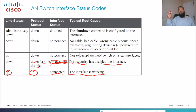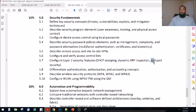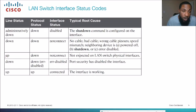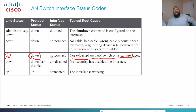We'll go further in depth on err-disabled and port security in section 5.7, configure layer two security features. When we have layer one as up and layer two as down — an up/down combination — it'll say not connect, and this is not expected on LAN switch physical interfaces. Typically you'll see this on a virtual interface like a loopback or interface VLAN 1.